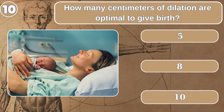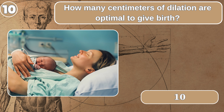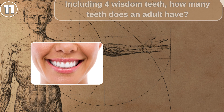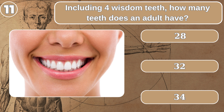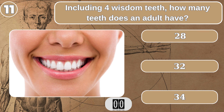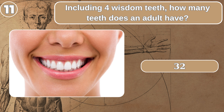How many centimeters of dilation are optimal to give birth? 10. How many teeth does an adult have? 32.